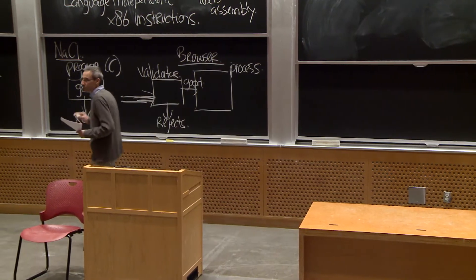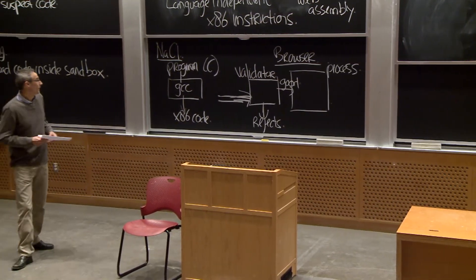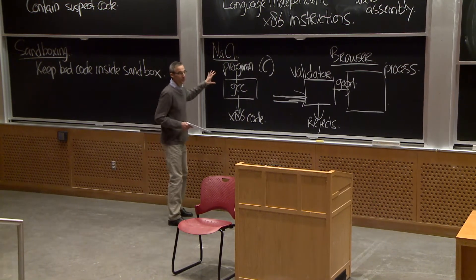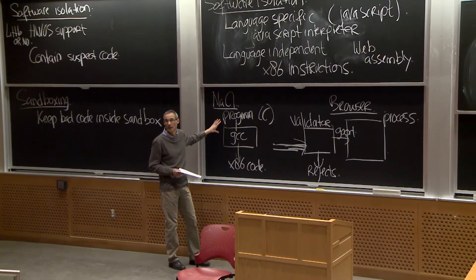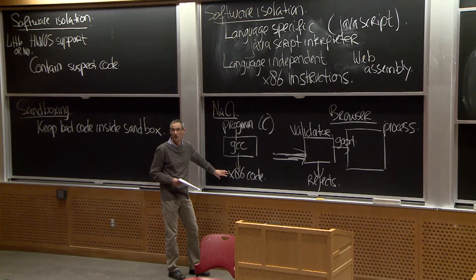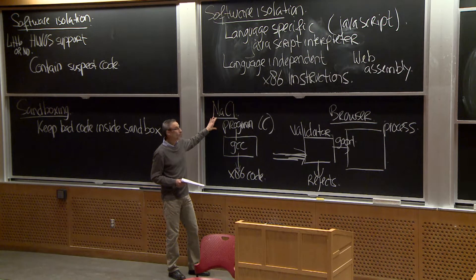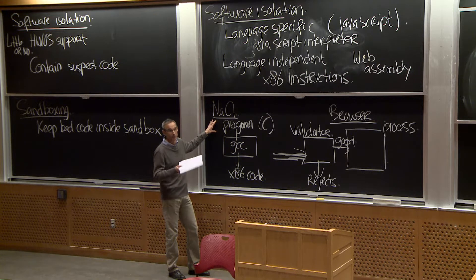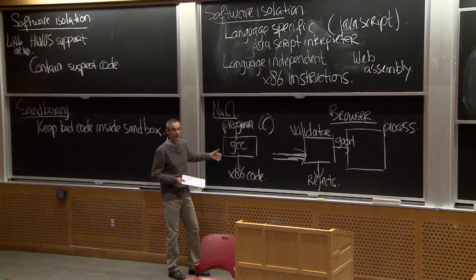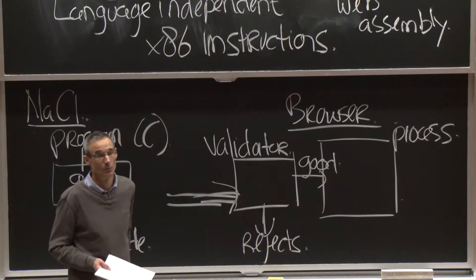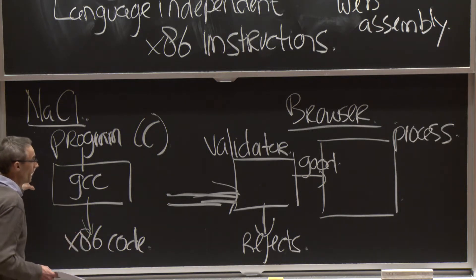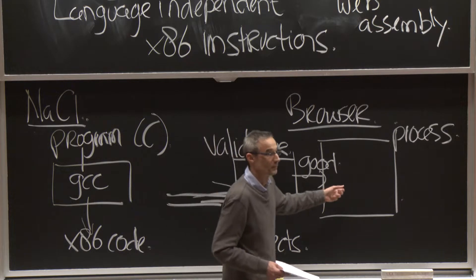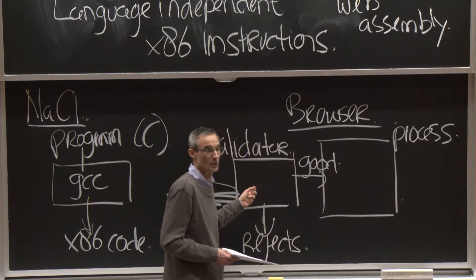Notice that this approach gives us a programming language-independent aspect, because in principle any compiler or any input language that generates x86 code could be used. Secondly, it gives you support for legacy applications — if you have a legacy application written in C and don't want to port it to JavaScript, you can compile it to x86 instructions and execute it in your browser. And finally, it gives us high performance, because we're going to mostly run these x86 instructions directly on the processor.